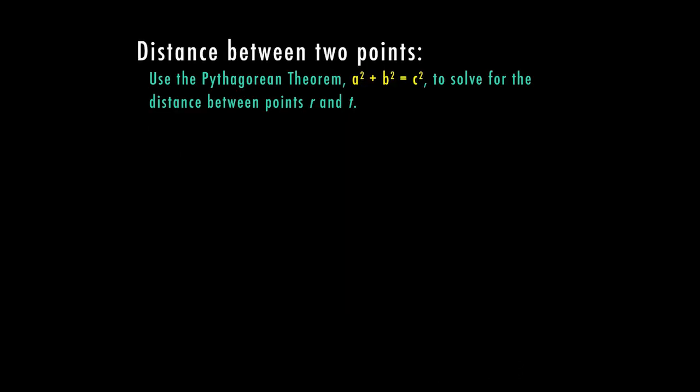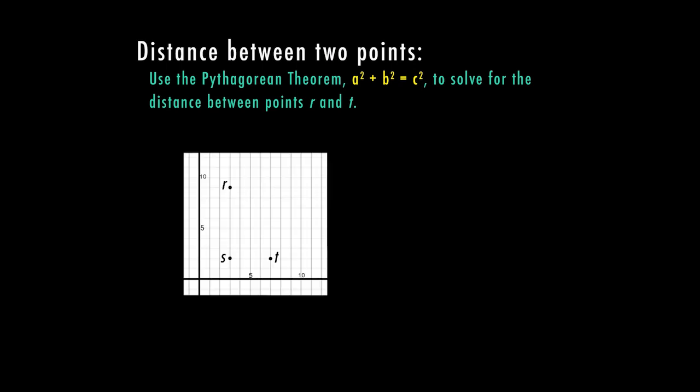So we can use the Pythagorean theorem, a² + b² = c², to solve for the distance between points r and t. So here in my graph, I'm given three points r, s, and t. And I can make a triangle based on those three points. I can tell pretty quickly that it is a right triangle. So we want to figure out the distance of the red line between r and t.